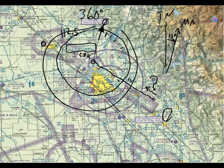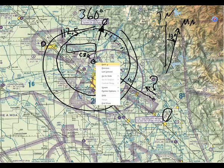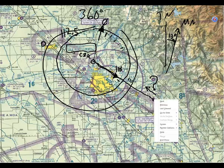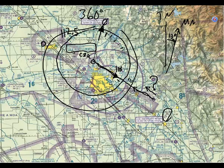If I was at this transmitter flying outbound in that direction, my compass would read 110. But I'm going from the airport in the opposite direction. So what would my compass read?